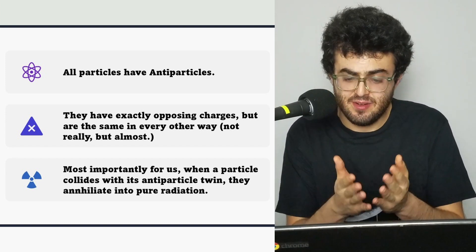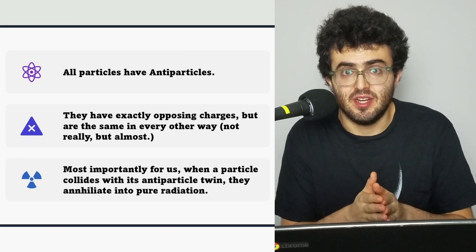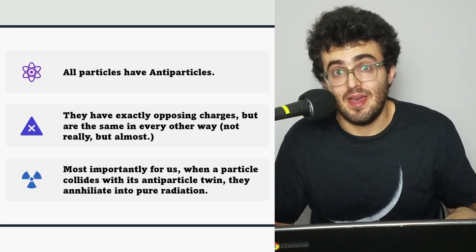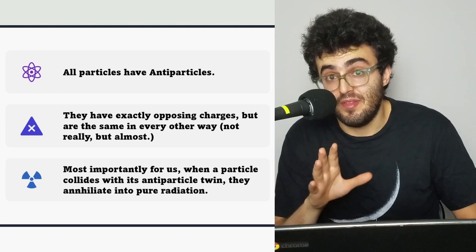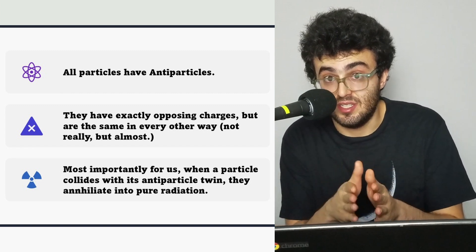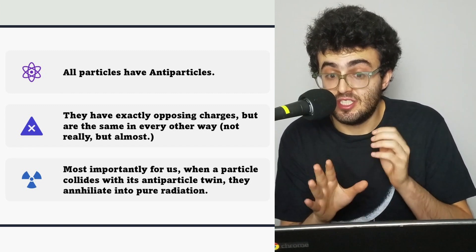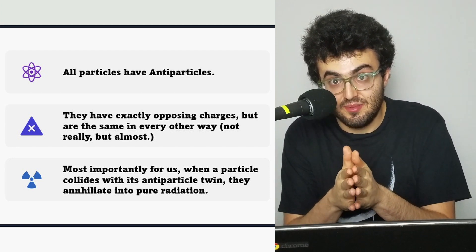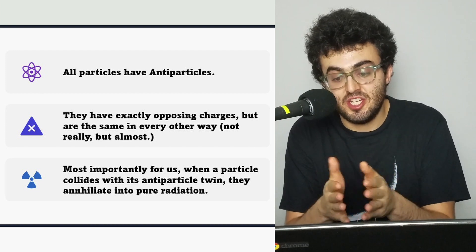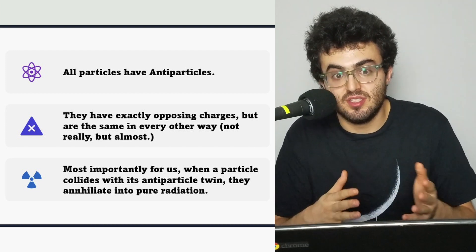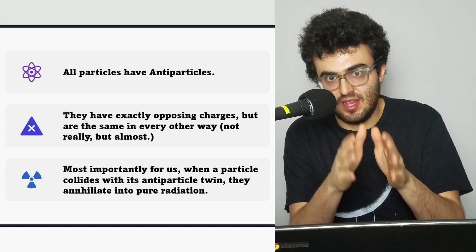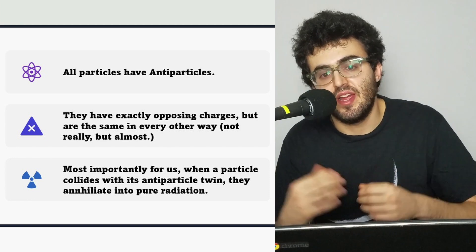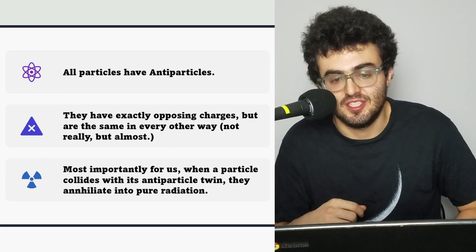The important thing to understand is that matter and antimatter particles are always created together — there's no such thing as creating matter alone. When you create matter, you create an equal amount of matter and antimatter, as seen in all of our particle accelerator experiments. That will lead to a very big question later in our history. But for the moment, the universe at 10 to the minus 33 seconds has an electron crashing into a positron, creating a high-energy photon, which in turn may very well create a new electron and positron.